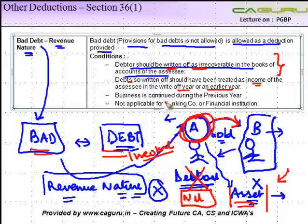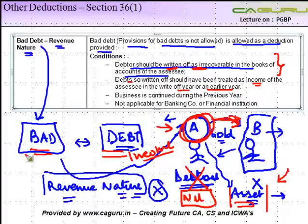The idea behind this adjustment is that there was an amount which you treated as income in some earlier year when you sold goods to B, but because you did not receive it — even though you might have paid tax in that year when you made the sale — ultimately you did not receive it, so there was no profit, and therefore the allowance for bad debt is given.